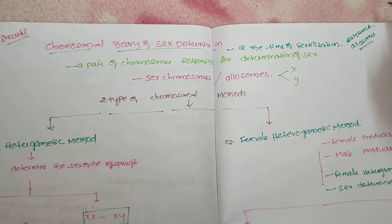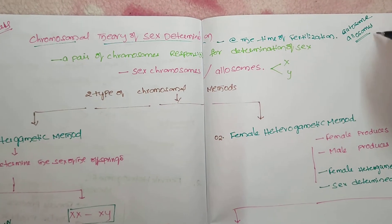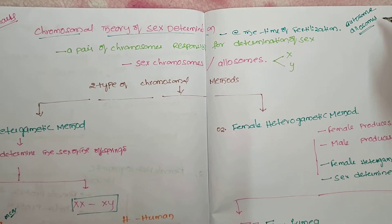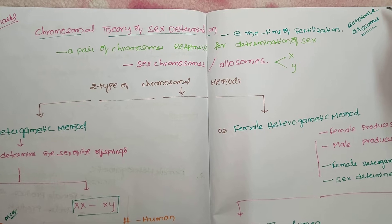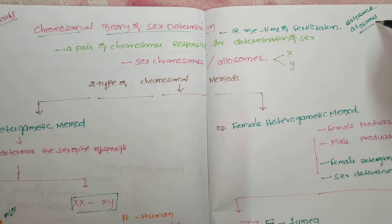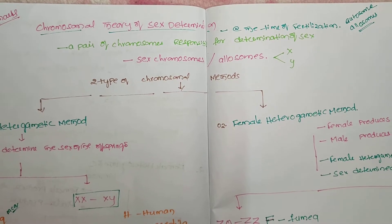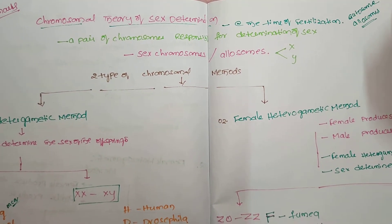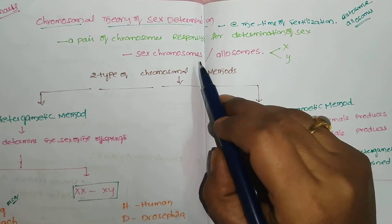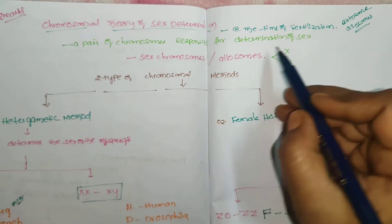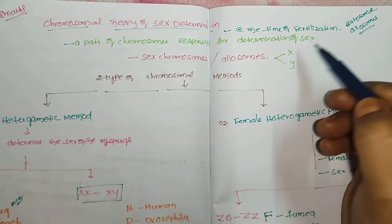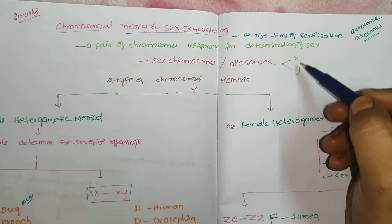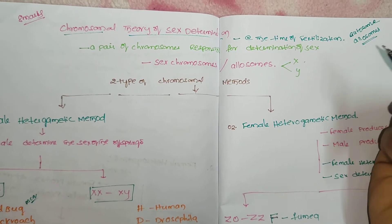We have autosomes and allosomes. Allosomes are a pair of chromosomes responsible for the sex of the offspring — they are called allosomes or sex chromosomes. For example, in humans, XY — it is also heterogametic.